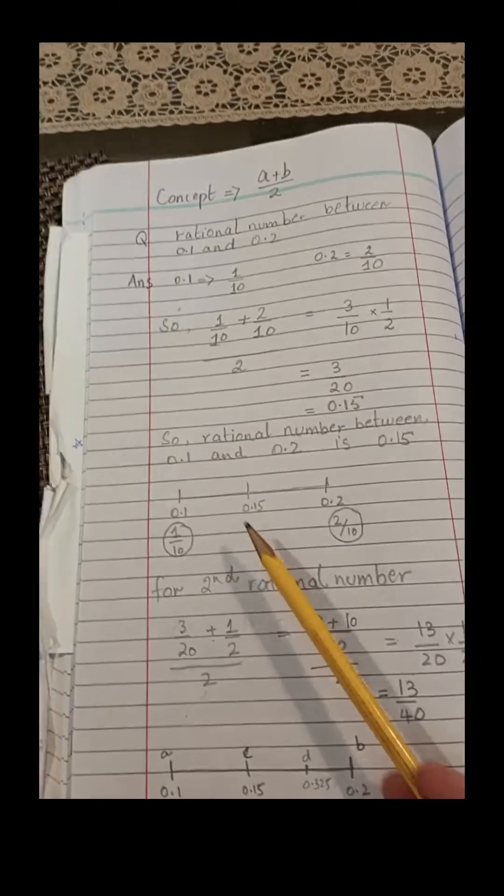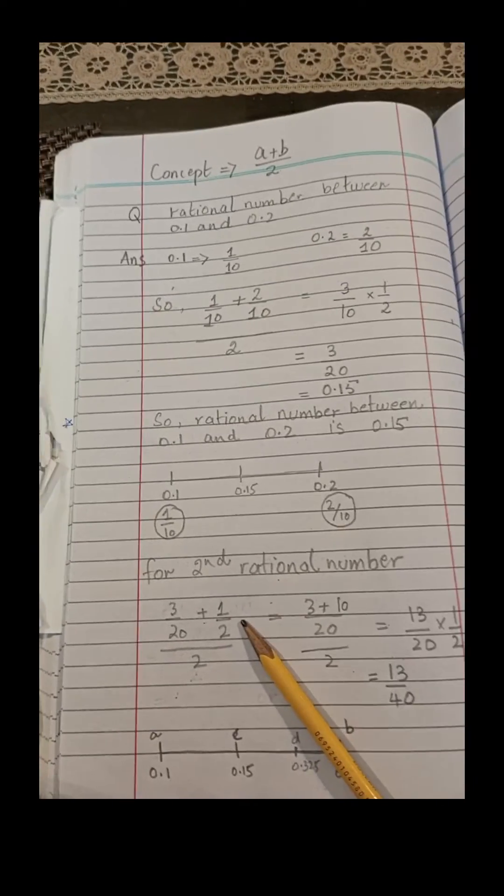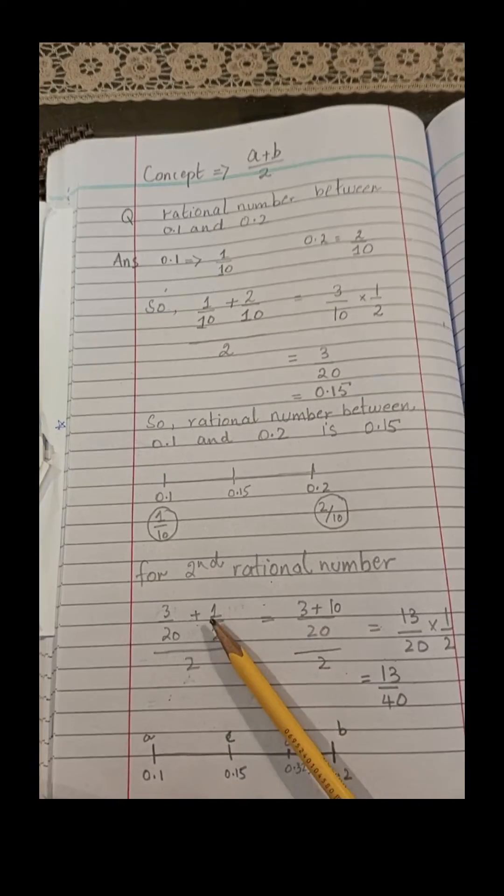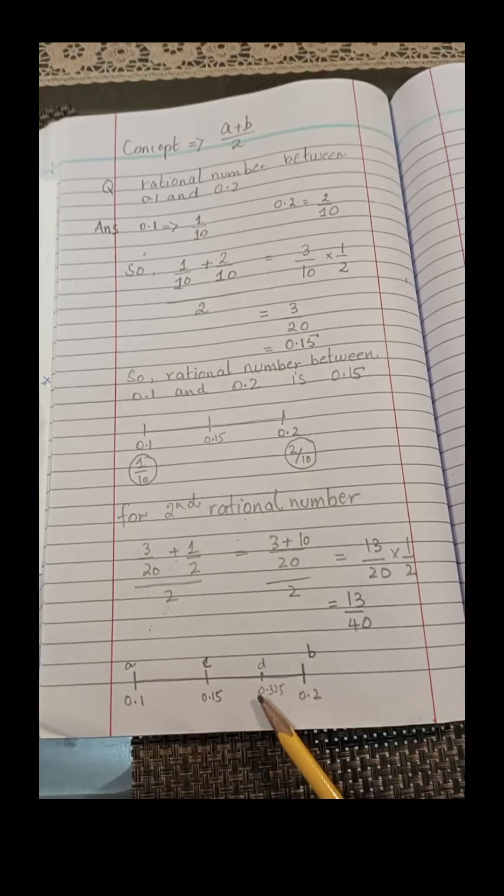I'm finding between 0.15 and 0.2 by following the same rule. Adding both numbers and dividing by 2, I get 13 by 40, which is 0.325.